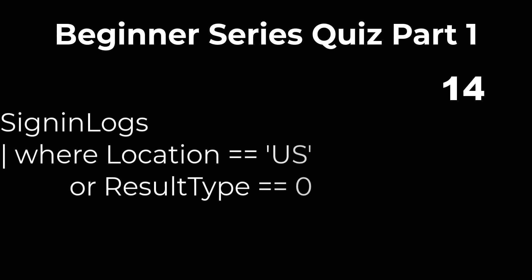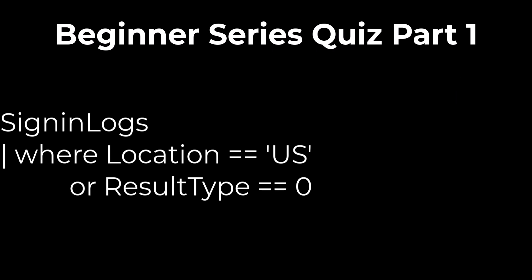Problem 1: This query will show results only if both the location is US and the error code does not equal zero. If we have two conditions and we want them both to be true for a record to display, we can either use two WHERE statements or an AND statement. In this example, an OR statement is used, which means if either condition is true, the record will display. The answer is false.